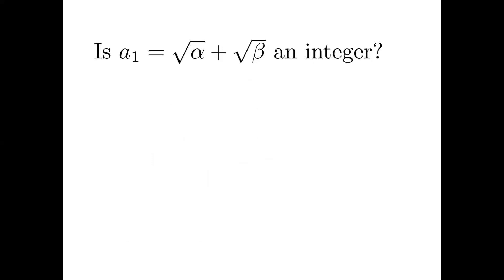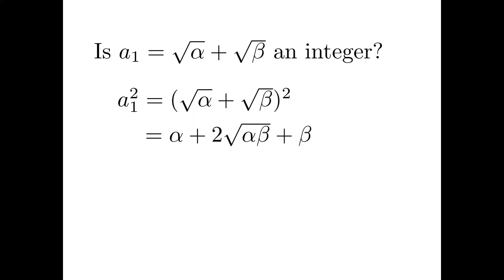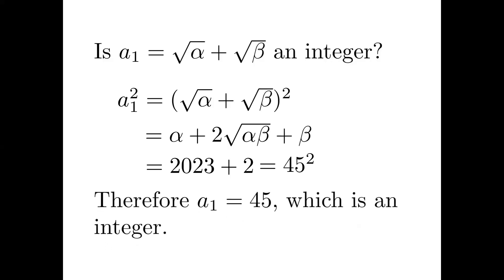For a1 — is the square root of alpha plus the square root of beta an integer? To use Vieta's formula, we calculate a1 squared: the square root of alpha plus the square root of beta, all squared, expands to alpha plus 2 times the square root of alpha beta plus beta. Since alpha plus beta is 2023 and alpha times beta is 1, this equals 2023 plus 2 equals 2025, which is a perfect square. Therefore, a1 equals 45, an integer.